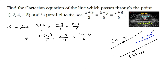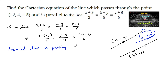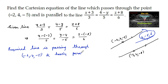We can assume that the direction ratios of the parallel vector for the required line are also 3, -5, and 6. So our required line passes through (-2, 4, -5) and has direction ratios 3, -5, 6.